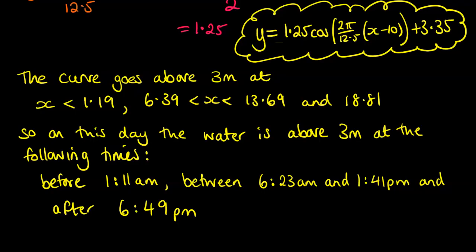So reading off those intersection points from Desmos, we get these values here for when that line goes above the three meter mark, and then we just need to turn them into hours after midnight. So that becomes 1:11 a.m., between 6:23 and 1:41 p.m., and after 6:49 p.m.